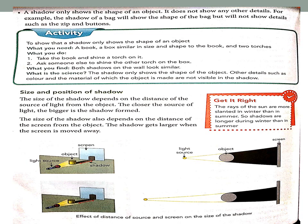Next: size and position of the shadow. What is the size of the shadow? The size of the shadow depends upon the distance of the source of light from the object. If you keep the object closer to the light, the shadow will be bigger.